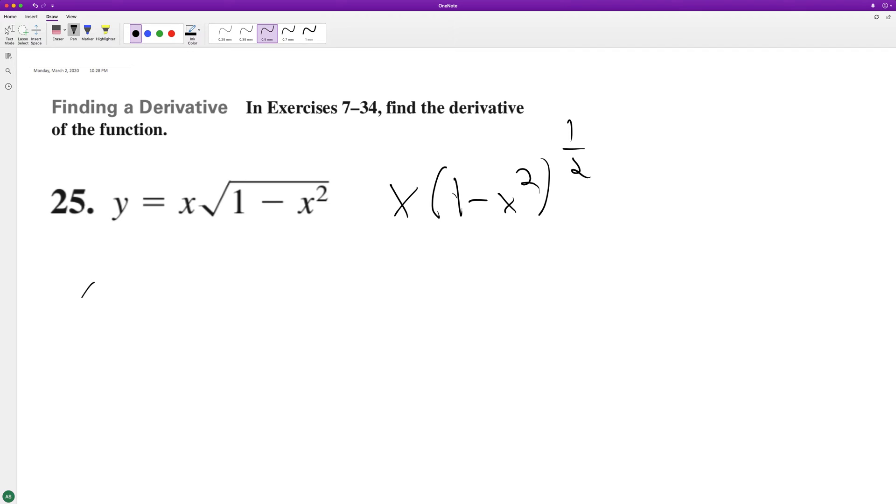So using the product rule y prime, it's going to be equal to 1 times 1 minus x squared raised to the 1 half, plus x times, pull down the 1 half, derivative of the inside is negative 2x, and then we have 1 minus x squared raised to the negative 1 half.